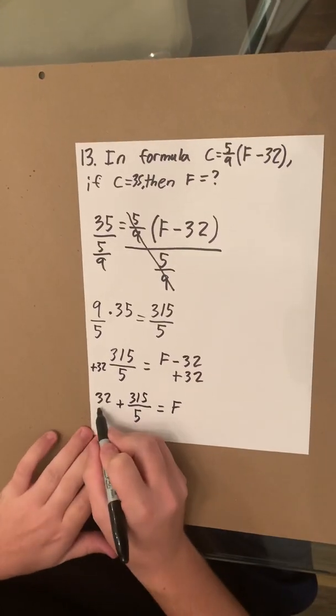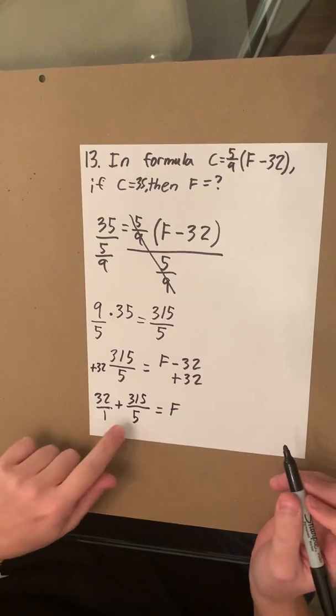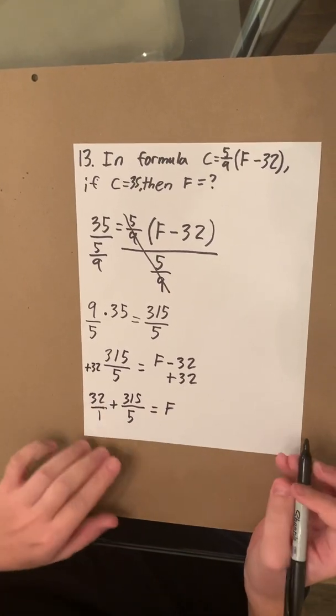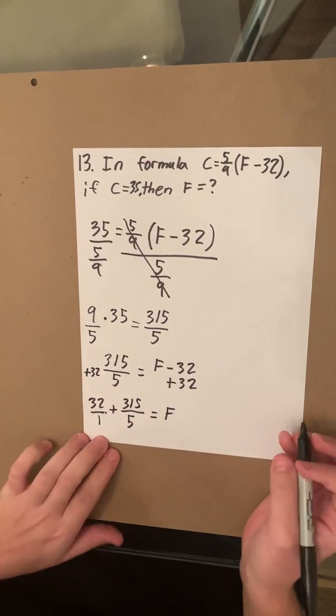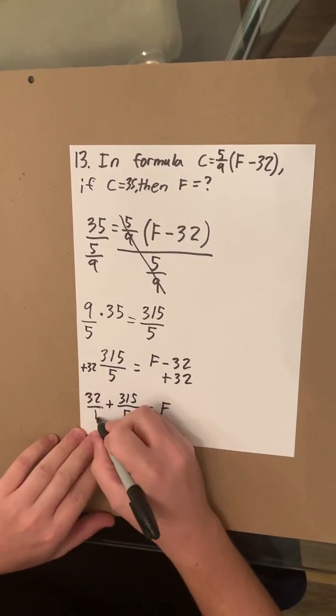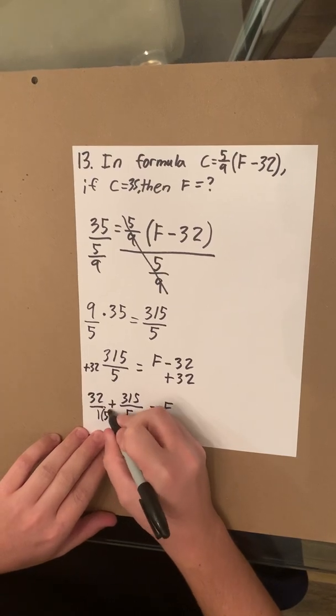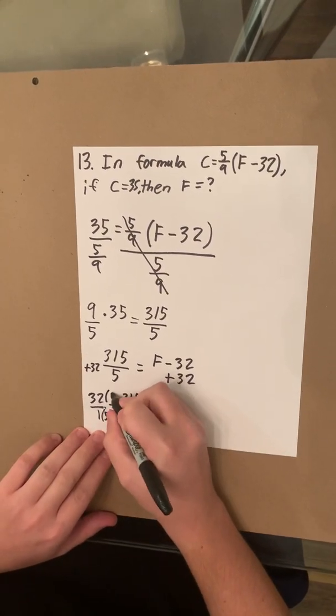But now these don't have least common denominators, so we need to make that a thing so we can add them together to find F. So the least common denominator between 5 and 1 is 5. So anything you do to the bottom must be done to the top.